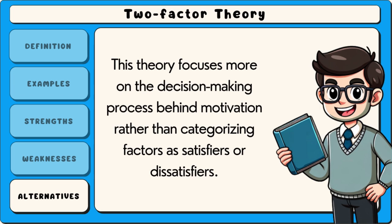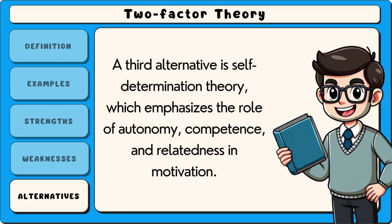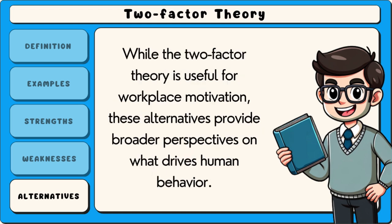A third alternative is self-determination theory, which emphasises the role of autonomy, competence, and relatedness in motivation. While the two-factor theory is useful for workplace motivation, these alternatives provide broader perspectives on what drives human behaviour.